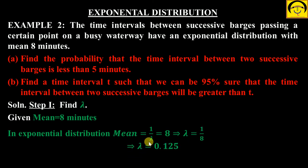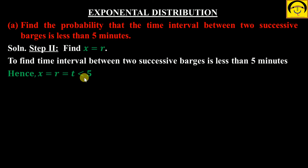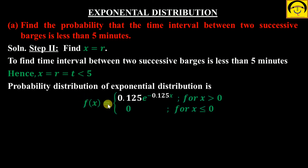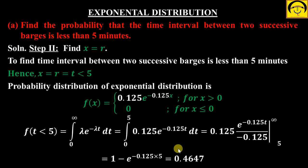Next step: x nikalna hai. x means time, less than 5 minutes, so x < 5. PDF aapka yeh hai. Lambda ki value aap nikal chuke ho: 0.125 aayi hai. To yeh PDF ban gaya: 0.125 · e^(−0.125x). Aapko x < 5 nikalna hai, means t < 5. To aapke limit 0 to 5 hai. In place of lambda substitute 0.125, isko integrate kar do, limit substitute karo — aapka answer aa gaya.